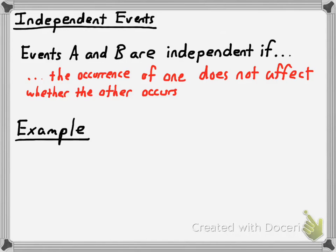Mathematically, examples of independent events would be that you roll a die and you toss a coin. Maybe those two things are part of the same experiment, but if you get a five from rolling a standard die, that doesn't affect whether you get heads or tails when you toss a coin.